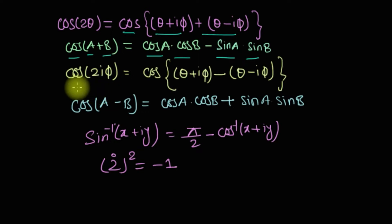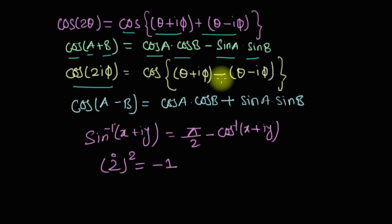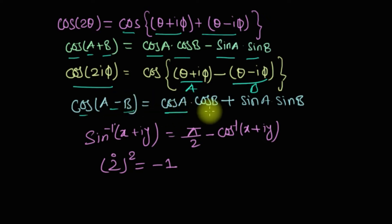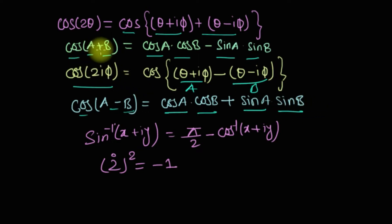यहाँ पर cos(2iφ) हो तो उसको हम लिख सकते हैं cos(θ+iφ − (θ−iφ)), यानि cos(a−b)। cos(a−b) = cos(a)·cos(b) + sin(a)·sin(b)। यानि cos(a+b) में minus होता है तो यहाँ plus, और minus की जगह plus।